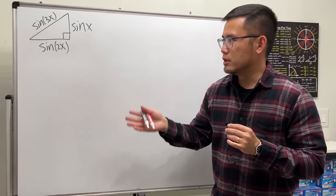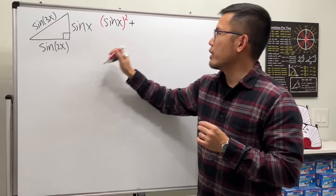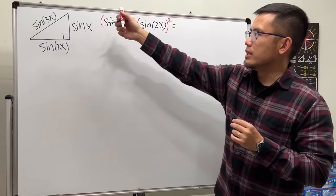Of course, we can set this up by using the Pythagorean theorem. So we square sine x, and then we add sine of 2x squared, and we make that equal to the hypotenuse squared — so sine of 3x, squared.